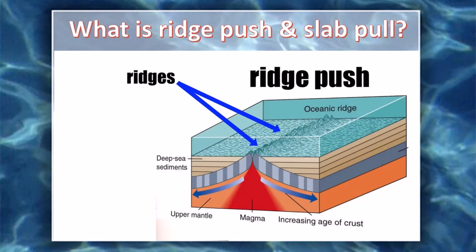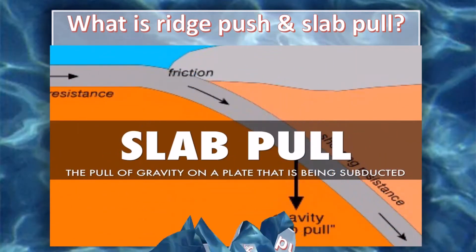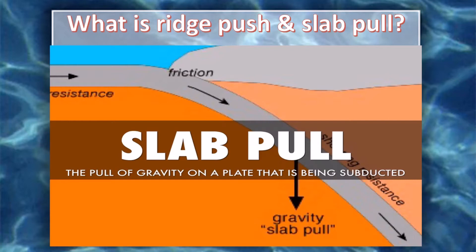What is ridge push and slab pull? Scientists suspect that two other motions — slab pull and ridge push — help move these huge plates. Ridge push occurs when material from a mid-ocean ridge slides downhill from the ridge, pushing the rest of the plate. The lithosphere thickens with distance and time away from the mid-ocean ridge.